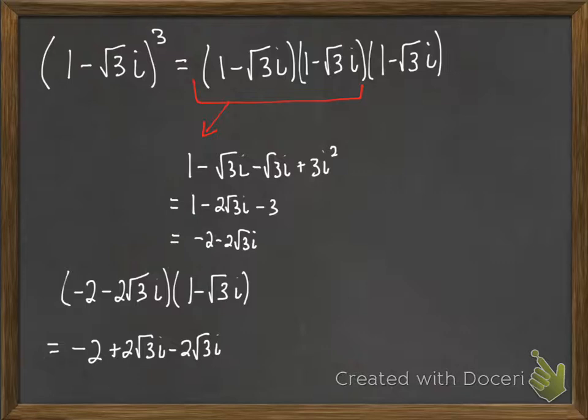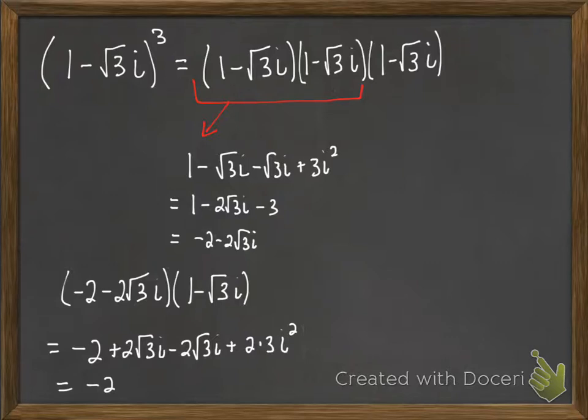And then we'll have minus 2 square roots of 3i times the square root of 3i. That'll be plus, then we'll have 2 square root of 3 and square root of 3 will be 3, and then i squared. Notice the middle terms there are opposites, so they cancel out. Leaving us with negative 2, and then 2 times 3 is 6i squared. But i squared is negative 1, so we have negative 2 and then minus 6 is negative 8.